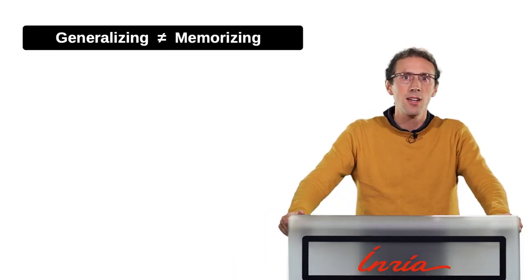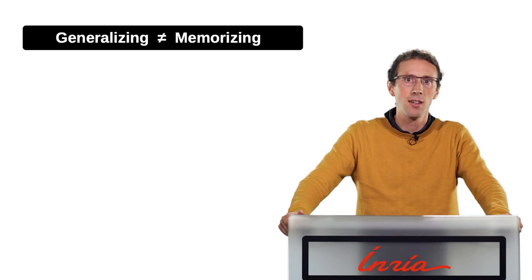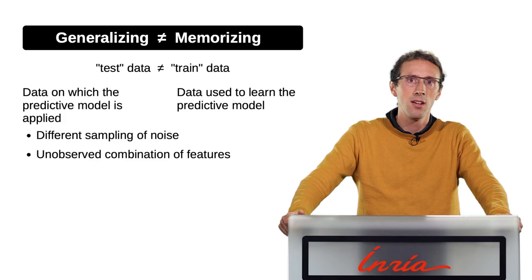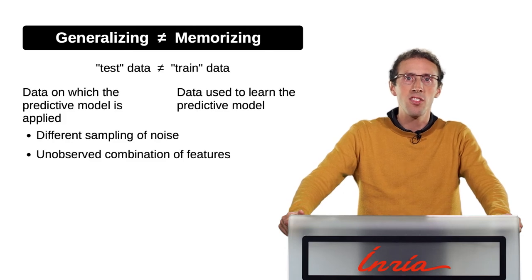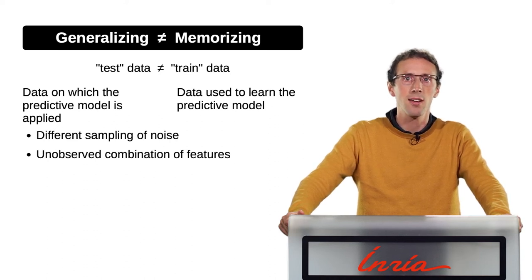What we are seeing here is that generalizing is very different from memorizing. This is a fundamental challenge of machine learning. The reason is that the data on which we apply the predictive model, known as the test data, is different from the data used to build the predictive model, known as the train data.